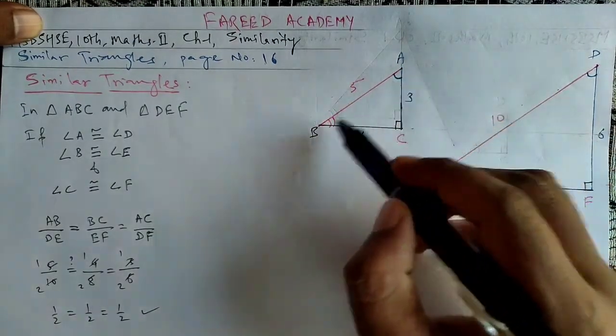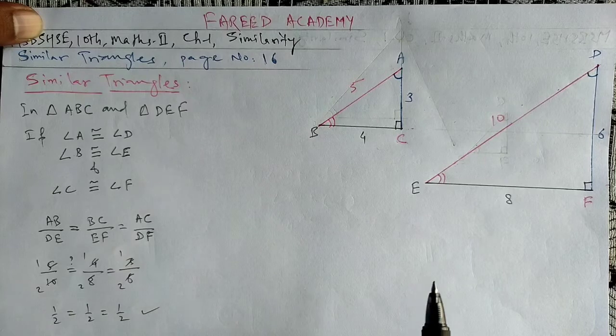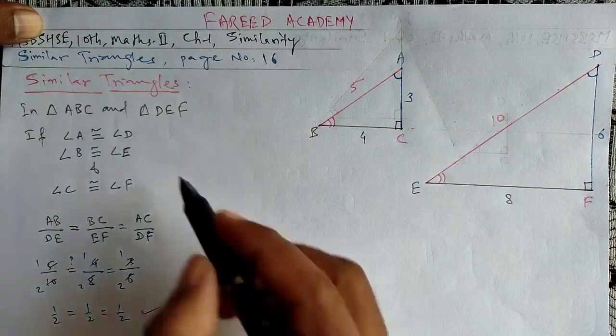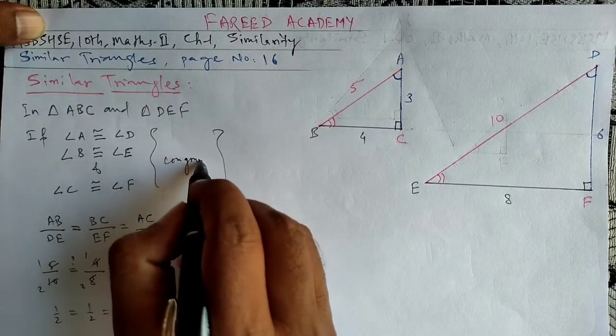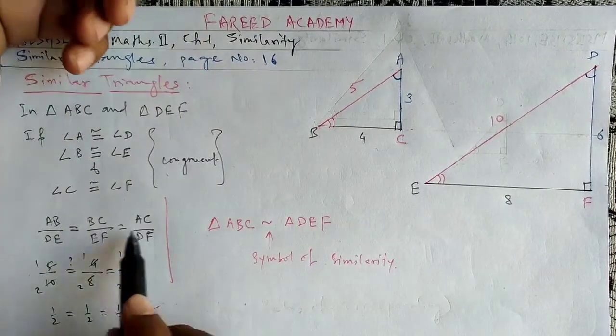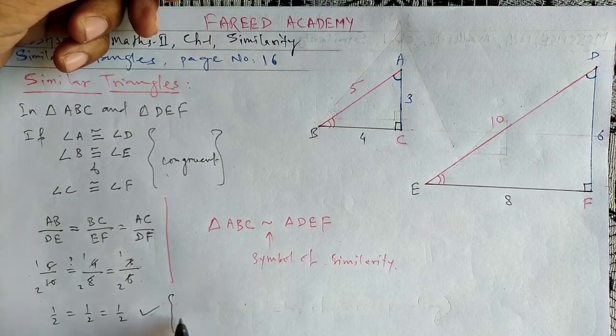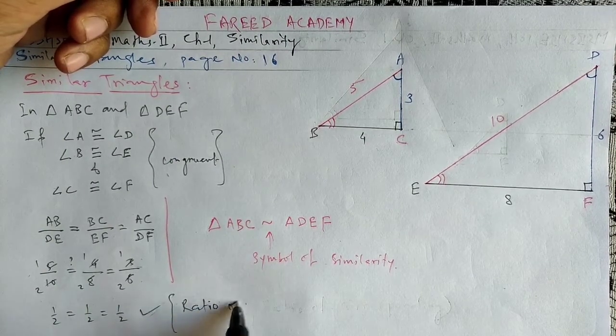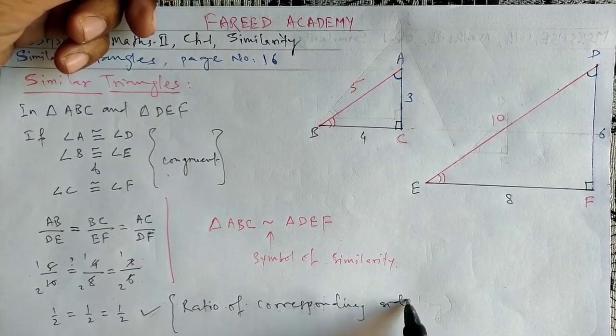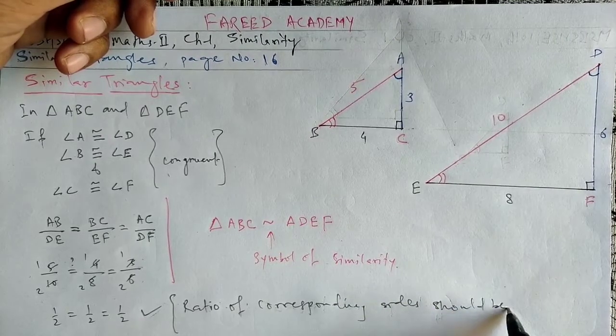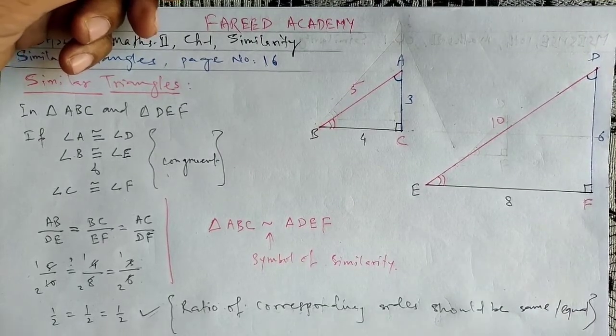If the corresponding sides' three ratios—AB by DE, BC by EF, and AC by DF—are all equal, then the ratio of corresponding sides should be the same.